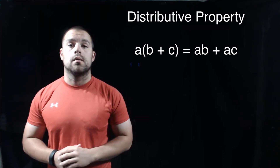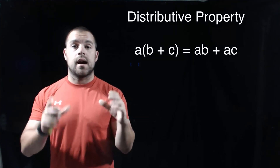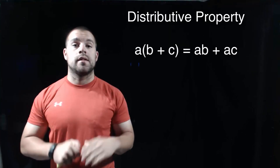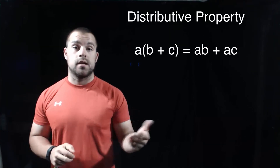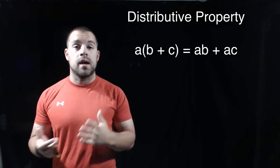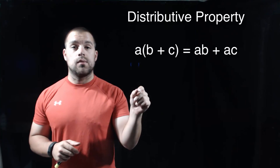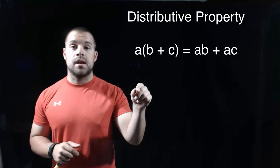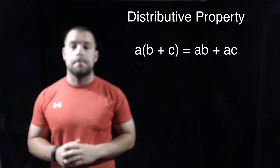We're going to need one more algebraic property to help us solve our last example, and that is the distributive property. So if we've got A times the quantity B plus C, then we can distribute that A to both the B and the C. So then we get A times B plus A times C.